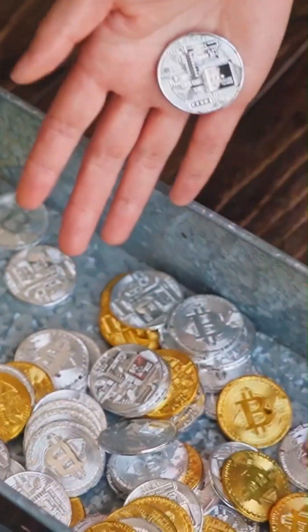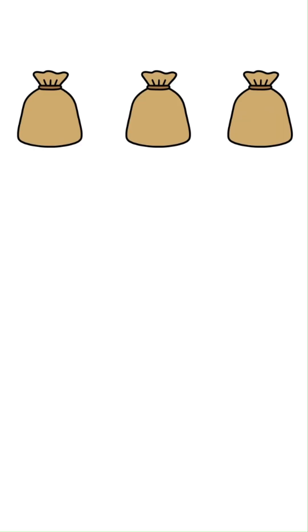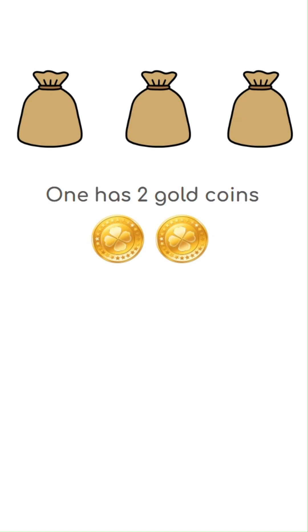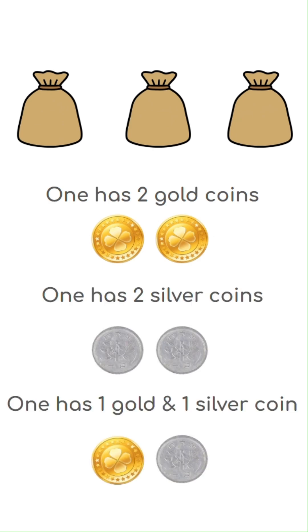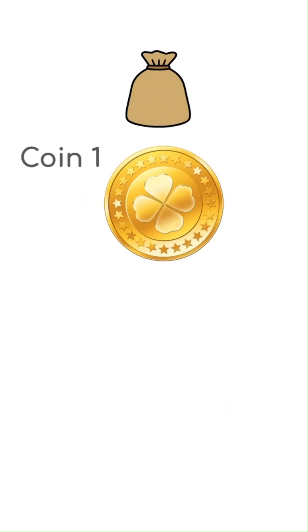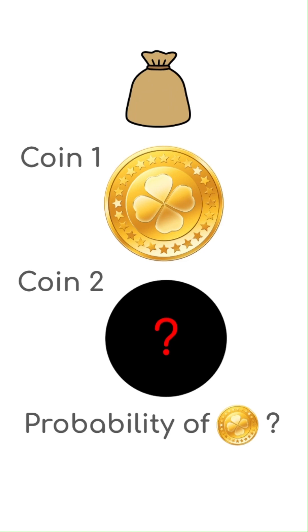Here's a problem. You are given three bags to choose from. One has two gold coins, one has two silver coins, and the last one has one gold coin and one silver coin. Let's say you select one bag and pick one coin. The coin turns out to be gold. You have not seen the other coin in the bag. What is the probability of the other coin being gold?